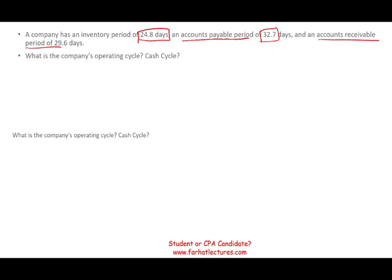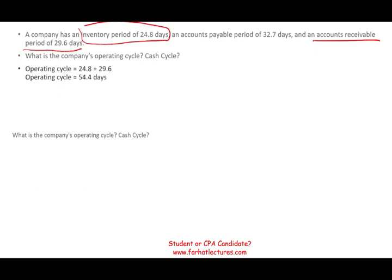You might see this as a multiple choice question. The operating cycle is the inventory period plus the accounts receivable period: 24.8 plus 29.6 equals 54.4 days. For the cash cycle, take the operating cycle (54.4) and deduct the accounts payable period (32.7), giving a cash cycle of 21.7 days. These are straightforward once you learn the material.